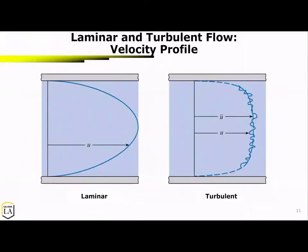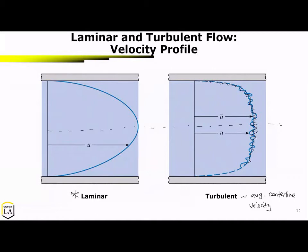Here is an example of the velocity profile for laminar flow. Along the center line for both pipes you'd still see a maximum velocity, but that maximum velocity is easy to predict under laminar conditions. With turbulent conditions, we actually end up using essentially the average center line velocity, because it's difficult to get a distinctive center line velocity.